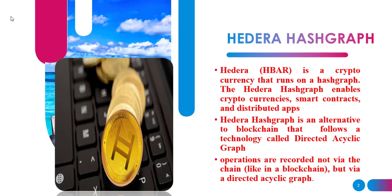Hedera is also known as HBAR. It is basically a cryptocurrency, similar to Bitcoin. Hedera is a cryptocurrency that runs on the hashgraph. Hedera Hashgraph basically enables cryptocurrencies, smart contracts and distributed apps. So Hedera Hashgraph is basically an alternative of blockchain technology.